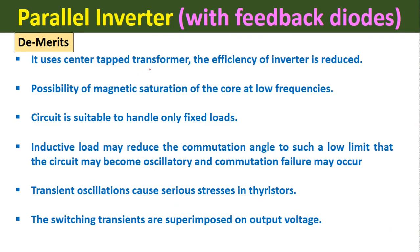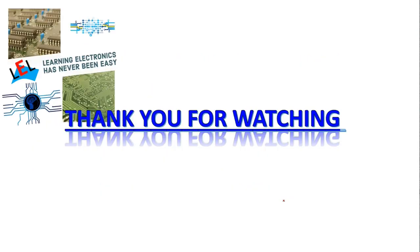The demerits of the parallel inverter with feedback diodes: First, it uses a center tap transformer, reducing efficiency since the transformer is not 100% efficient. Second, there is a possibility of magnetic saturation of the core at low frequencies. Third, the circuit is suitable only for fixed loads. Fourth, inductive load may reduce the commutation angle to such a low limit that the circuit becomes oscillatory and commutation failure may occur. Fifth, transient oscillations cause serious stresses in the thyristors. Sixth, switching transients are superimposed on the output voltage, resulting in a distorted output. Hope you have understood the topic — thank you for watching and please subscribe for more updates.